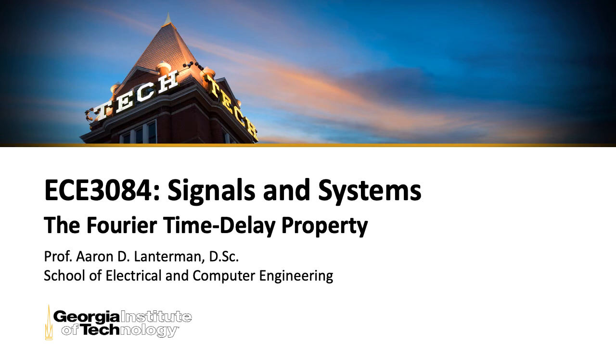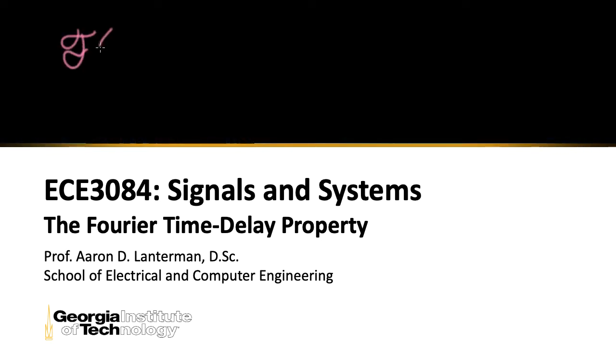Hi there, my name is Aaron Lanterman. I'm a professor of electrical and computer engineering at Georgia Tech. Suppose you needed to compute the Fourier transform of e to the minus 5 times t minus 3, u of t minus 3. So this is a decaying exponential that starts at 3.